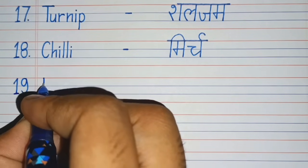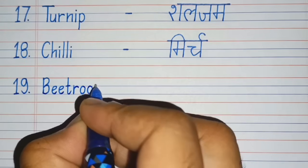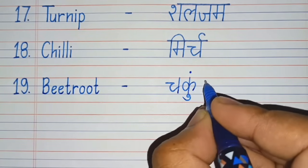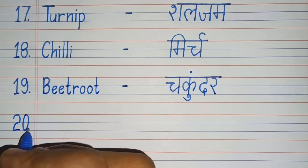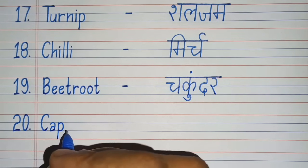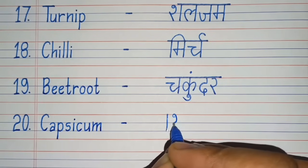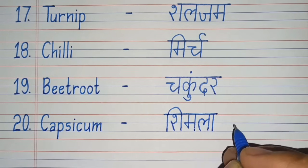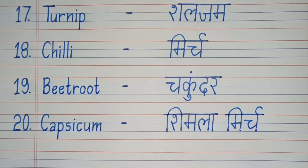Nineteenth number. B-E-E-T-R-O-O-T, Beetroot. Beetroot means Chukandar. Twentieth number. C-A-P-S-I-C-U-M, Capsicum. Capsicum means Shimla Mirch. So dear friends, if you like this video then subscribe to this YouTube channel. Thanks for watching.